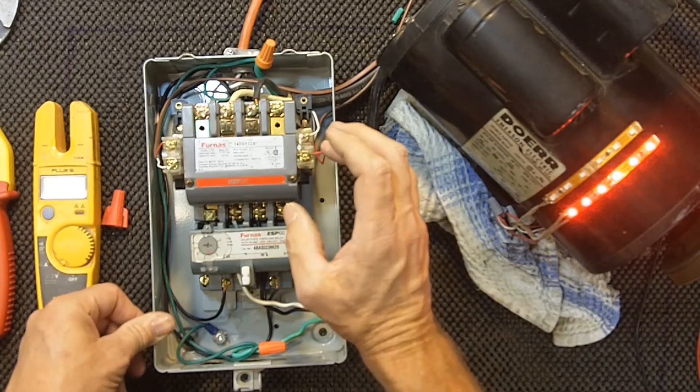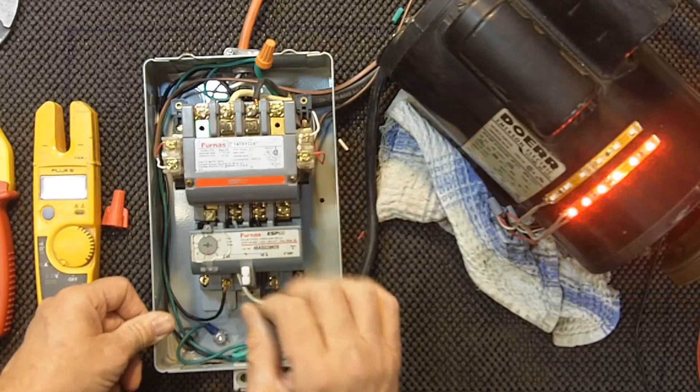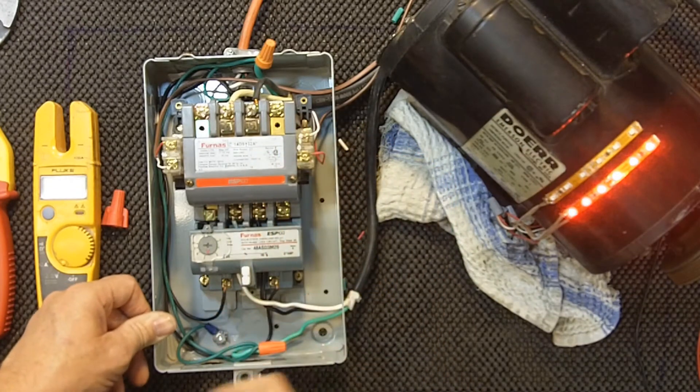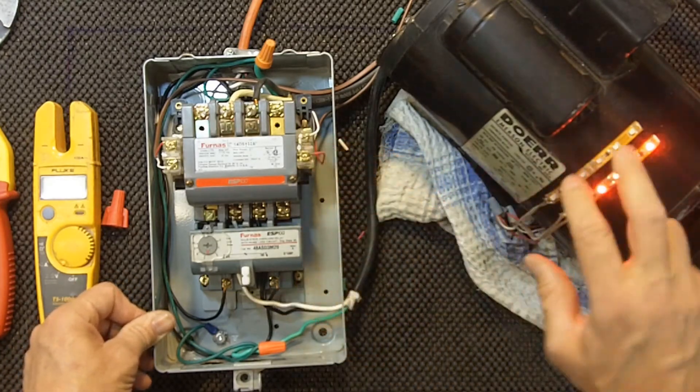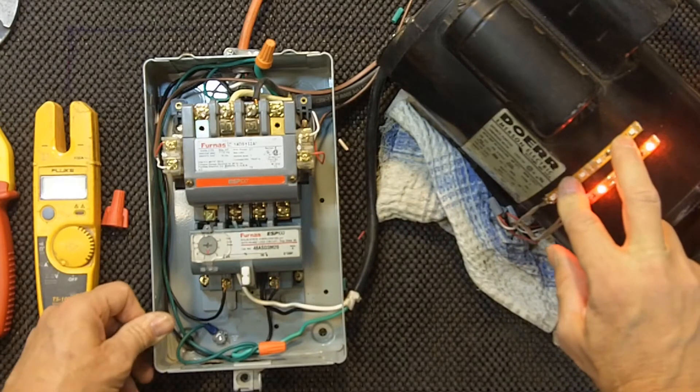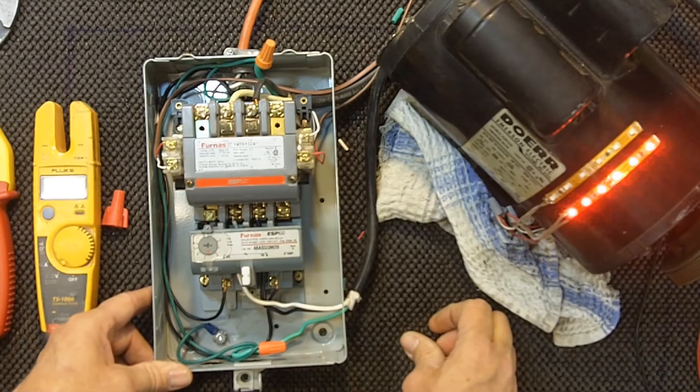On this side here, I've got the normally open, and remember the normally open, normally closed is in the de-energized state. So once this closes, then the green light will come on, and it'll let the operator or whatever know that the motor's running.